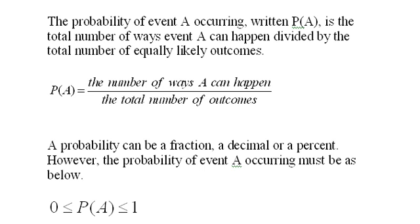A probability can be a fraction, a decimal, or a percent. However, the probability of event A occurring must be as below: it has to be greater than or equal to zero and less than or equal to one.